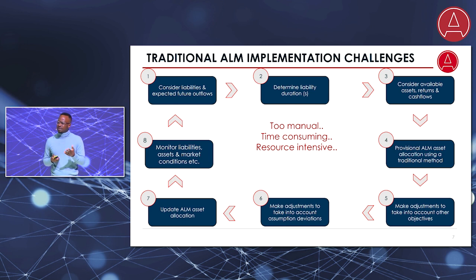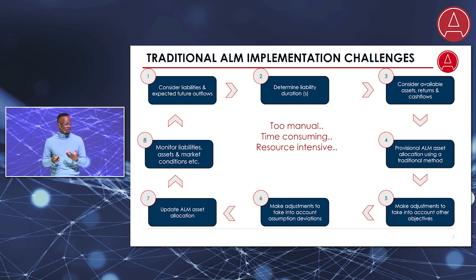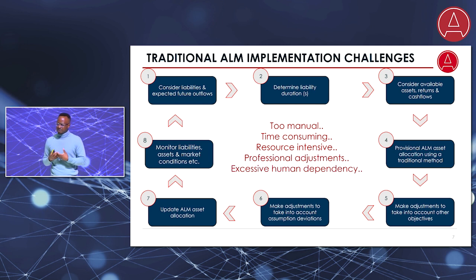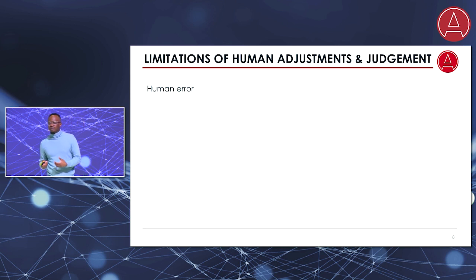The limitations due to assumptions require us as actuaries to actually adjust for the differences between theory and reality. We often have to intervene and make some judgments before we implement ALM. We also often have secondary objectives, and within this framework we don't have a clear way to incorporate them. So it introduces a severe dependency on human input. You may ask, what's the big deal with that? Aren't we trained professionals after all? Yes, we are indeed well trained. However, we are still human. Therefore, we are still fallible. We can make honest mistakes.